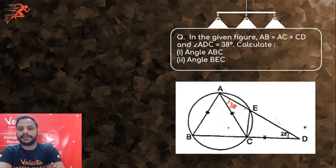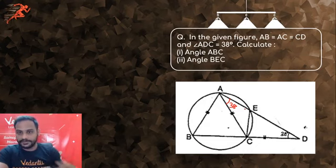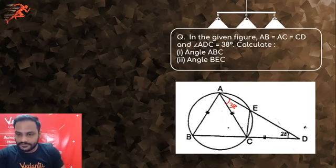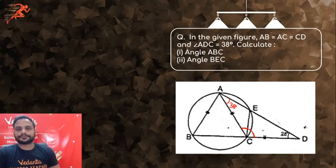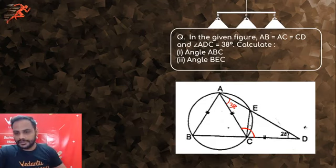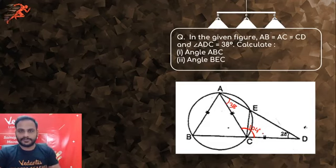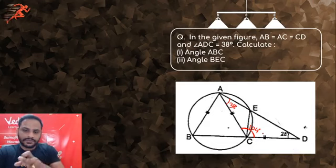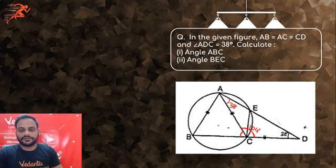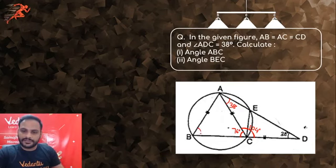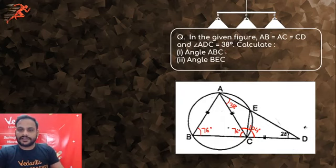Since AC = CD in the isosceles triangle, angle CAD = angle CDA = 38°. Using the angle sum property, angle ACD = 180 - 76 = 104°. The remaining angle ACB = 180 - 104 = 76°. Since AC = AB also, this angle is also 76°. So angle ABC = 76°.